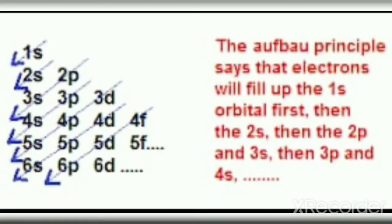Now let us see how the filling of electrons in orbitals takes place. The filling of electrons in orbitals — 1s, 2s, 2p, 3s, etc. — takes place according to the Aufbau principle. It states that in the ground state, orbitals are filled in increasing order of their energies: 1s first, then 2s, 2p, 3s, 3p, 4s, 3d, and so on.